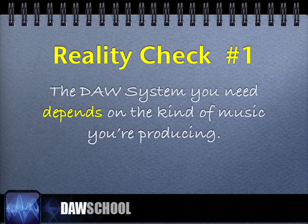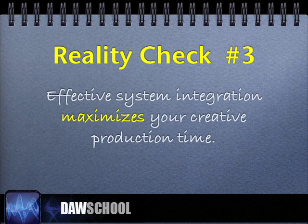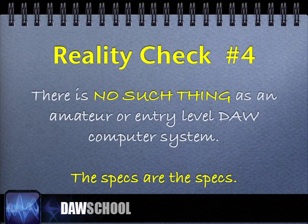Let's start Season 2 with a series of reality checks. Number one: the DAW system you need depends entirely on the kind of music you're creating and producing. Some can produce everything they ever wanted on one computer, while others will need several systems. Reality check number two: you need to learn how to buy a digital audio workstation before you buy it, and be aware, this is a 24 to 48 month buying decision. The better you plan and buy today, the better your system will avoid obsolescence. Reality check number three: effective system integration maximizes your creative production time. And reality check number four: in my view, there is no such thing as an amateur or entry-level digital audio computer system.